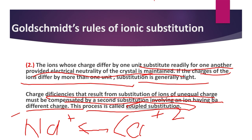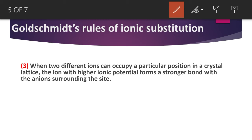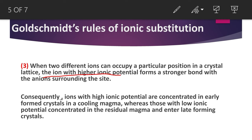The third rule: when two different ions can occupy a particular position in a crystal, the ion with higher ionic potential forms a stronger bond with the surrounding anions. Consequently, ions with higher ionic potential are concentrated in early-formed crystals because they can substitute more easily, forming crystals earlier in the cooling magma.